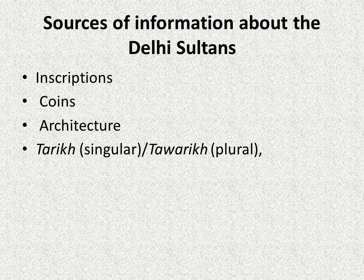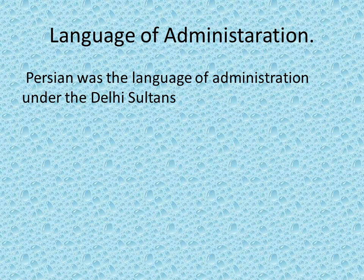Sources of information about the Delhi Sultans include inscriptions, coins, architecture — meaning buildings constructed under the Delhi Sultans — and Tarikh or Twariq. These were special handwritten documents produced under the Delhi Sultans. Persian was the language of administration under the Delhi Sultans.